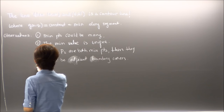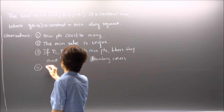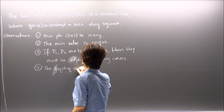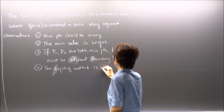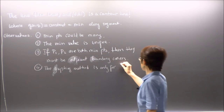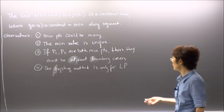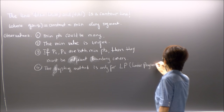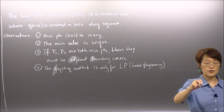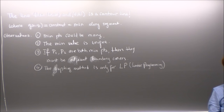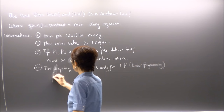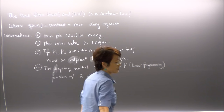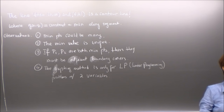Observation four: the graphing method only works for LP problems with two variables — LP stands for linear programming, which I'll use as shorthand throughout this course — because with more than two variables we cannot visualize and draw it on a blackboard.